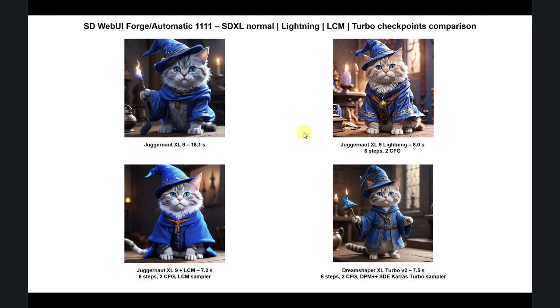There are model variations: normal XL, XL Lighting, LCN to accelerate, and Turbo models. These three accelerated options give much faster output but you lose quality. If you want details, use the standard model; for fast output, use the accelerated ones. XL Lighting is the newest and best accelerated model. LCN and Turbo give similar detail levels. All three use about 6 steps but with different configurations.